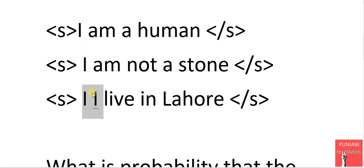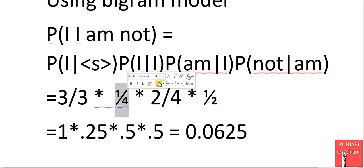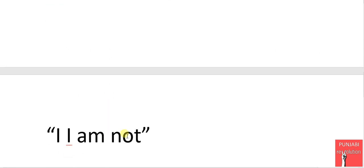And similarly, probability of am given I means the count of 'I am'. 'I am' occurred 2 times, and total I occurred 4 times, so it would be 2 over 4.